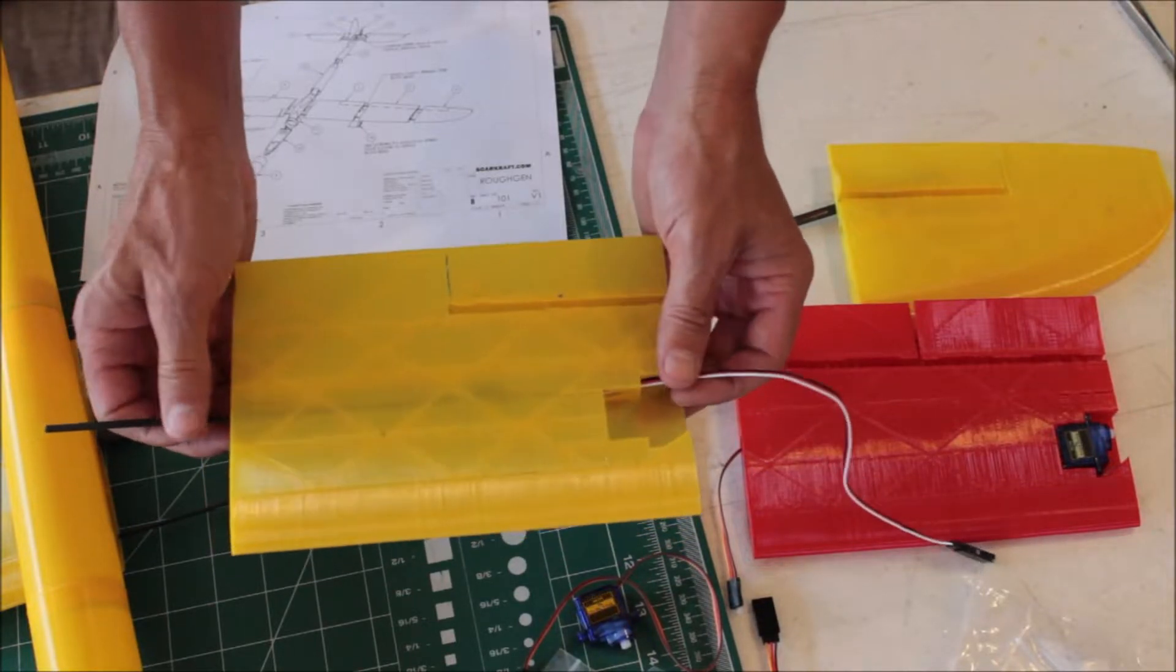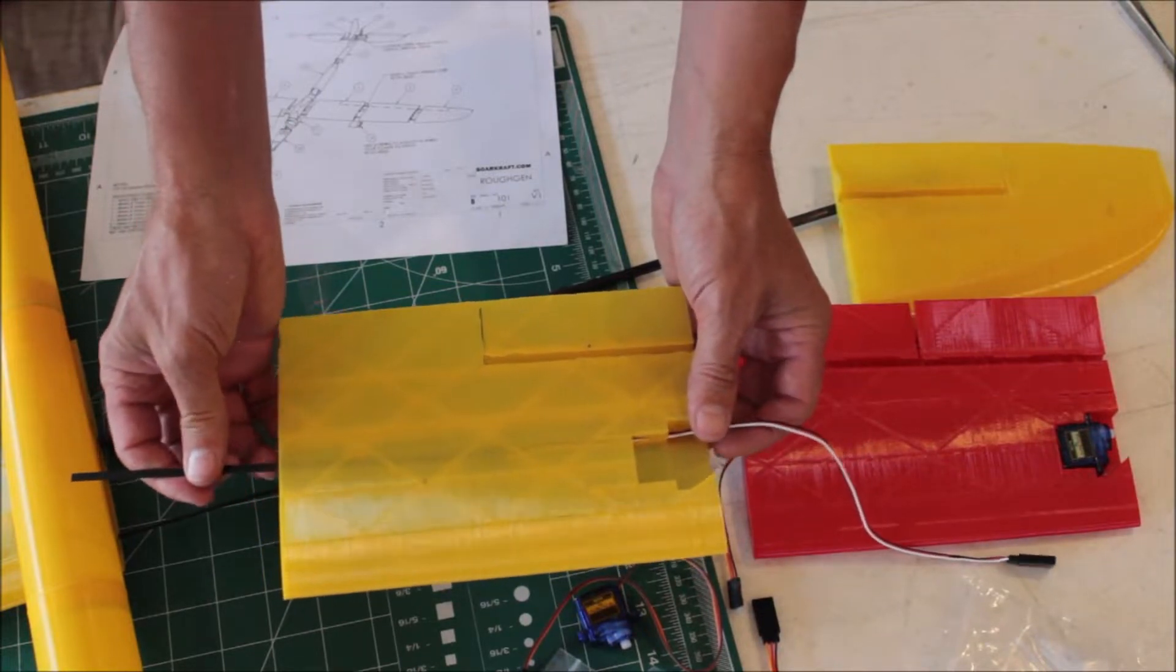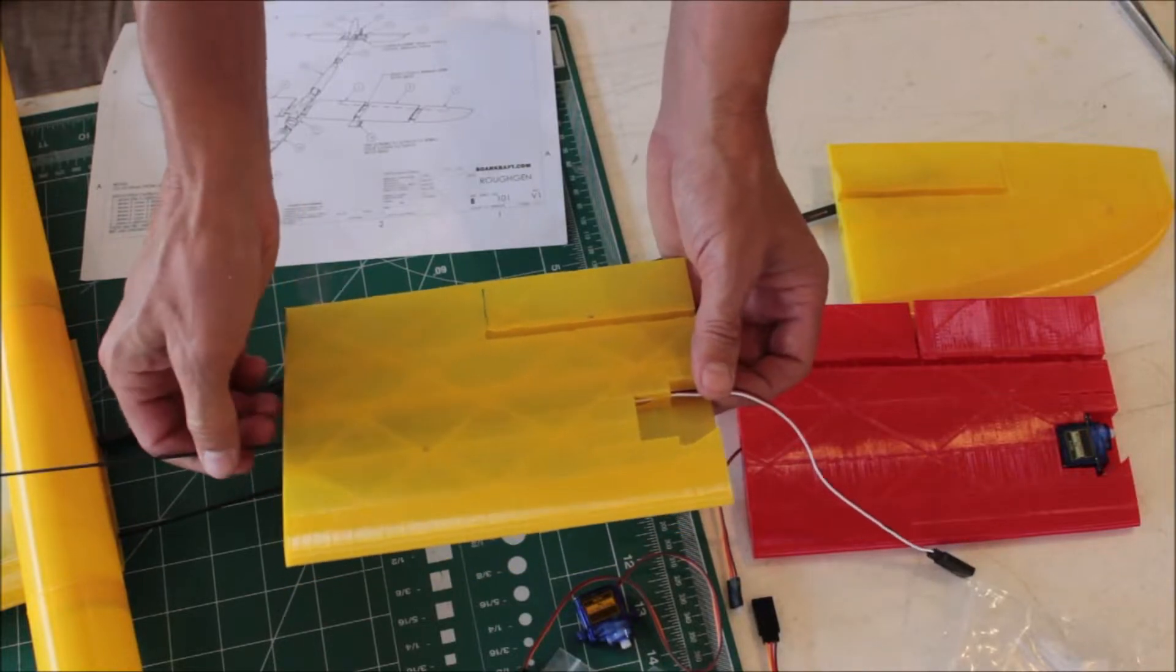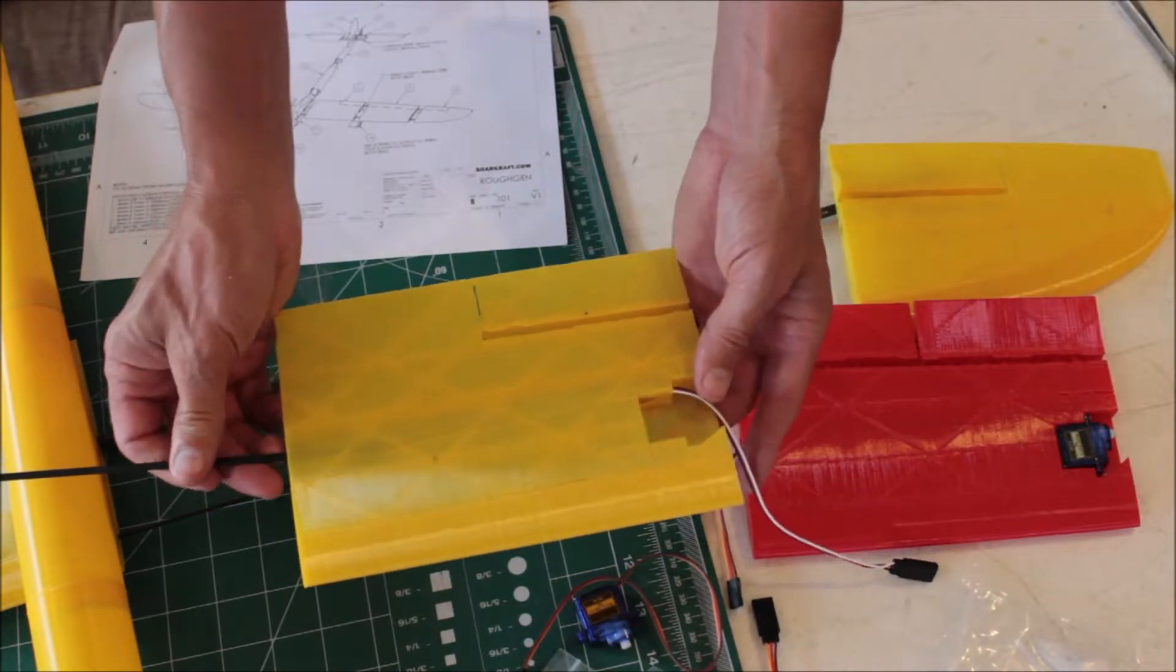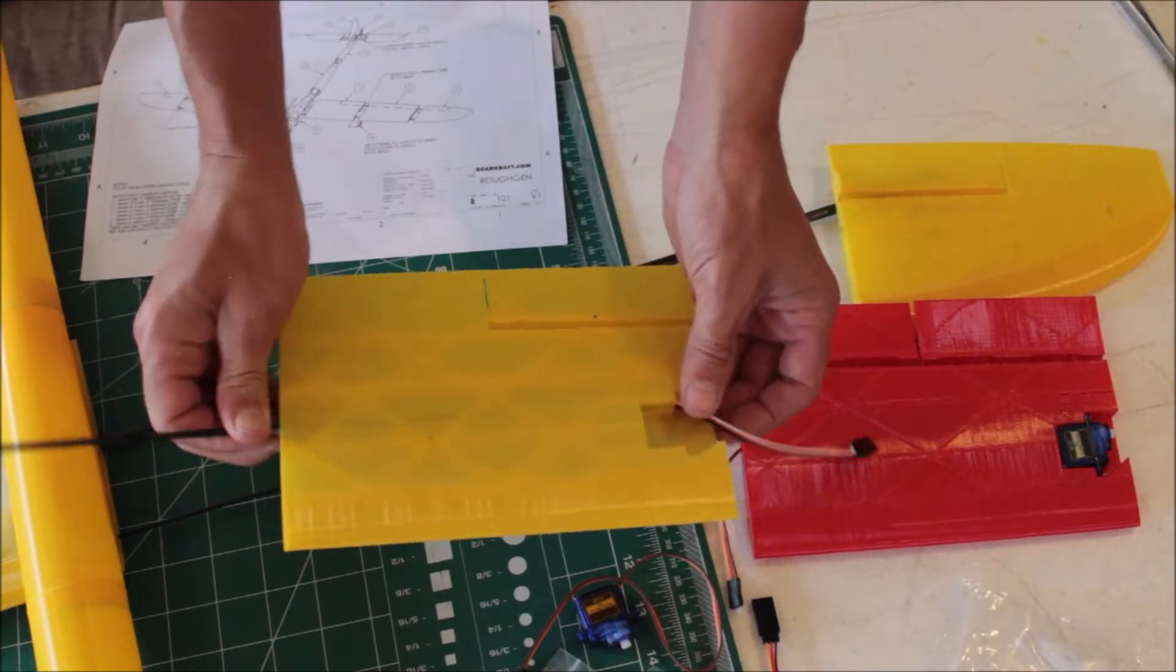Between the aileron servo and the flap servo wire, give it a little bit of room between when you're assembling everything.